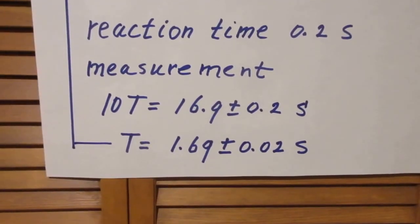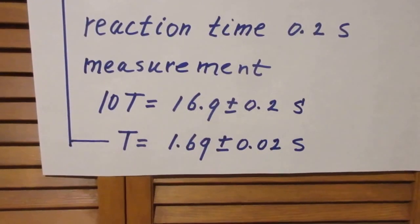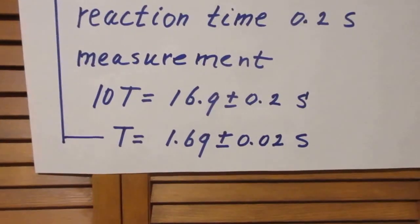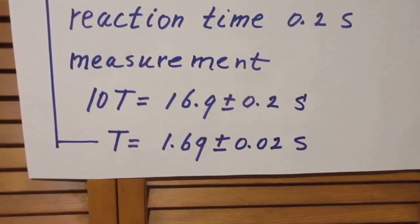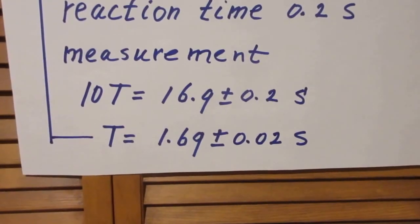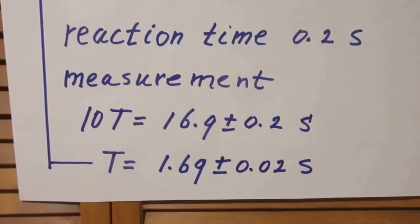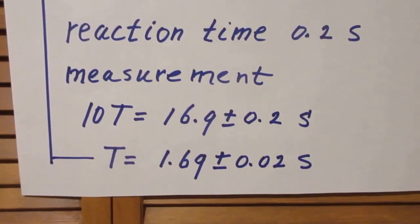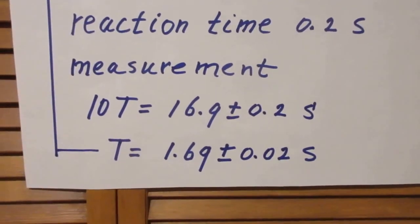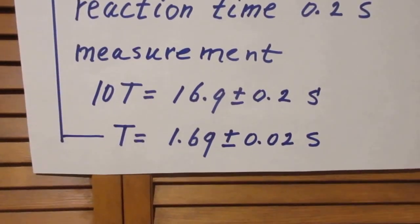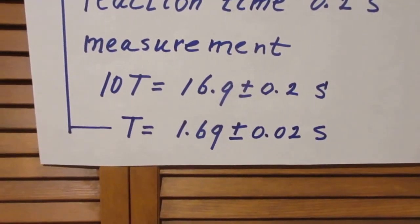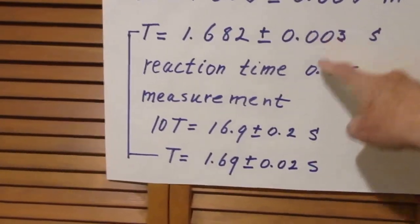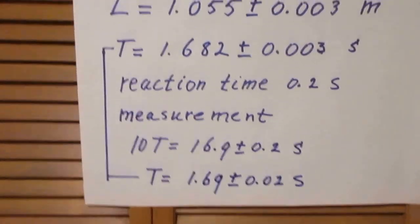I estimate roughly that my reaction time is about 0.2 seconds, 2 tenths of a second. I have measured 10 periods several times and every time that I measured it, my result for 10T is within 0.2 seconds the same. I list here only one result that 10T is 16.9 plus or minus 0.2 seconds. I divide by 10 and what do I find? That the period that I measure is 1.69 plus or minus 0.02 seconds. And now compare this one, which is the predicted one, with the measured one. And that's a beautiful result.